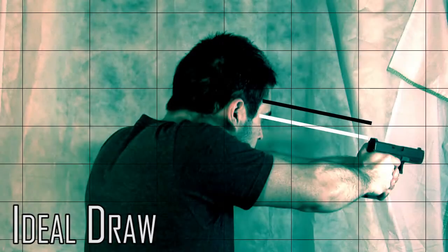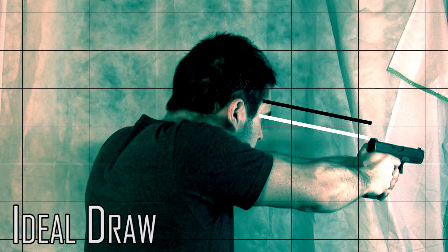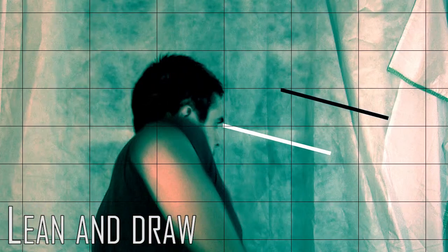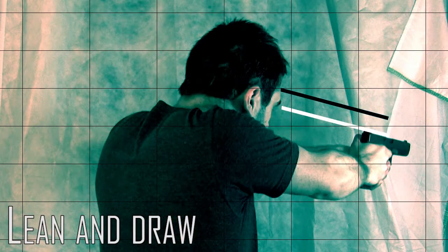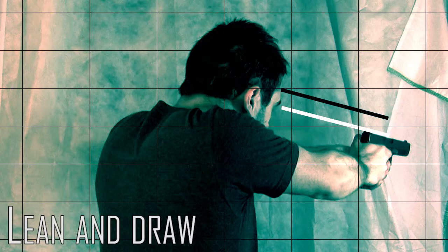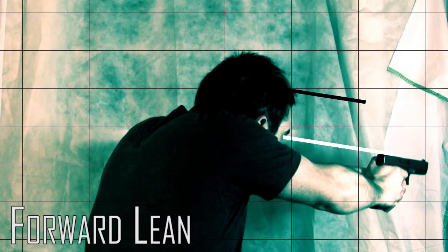Now, to compare all three draw strokes, you will see that the distance traveled or deviation from my original head eye position is greater than the ideal draw stroke, thus slower in regards to tracking my sights, gaining true sight alignment, and front sight focus.